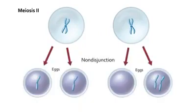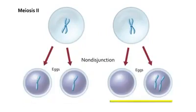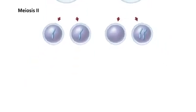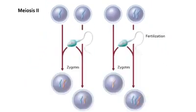When the daughter cells separate during meiosis 2, one daughter cell divides normally, but the other daughter cell divides abnormally. One egg lacks a chromosome while the other egg has an extra chromosome. When a haploid sperm cell fertilizes a haploid egg, a normal diploid results.